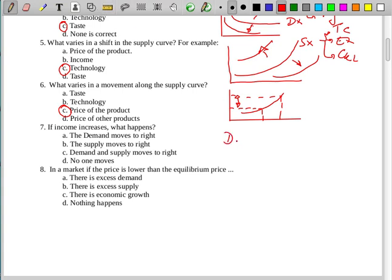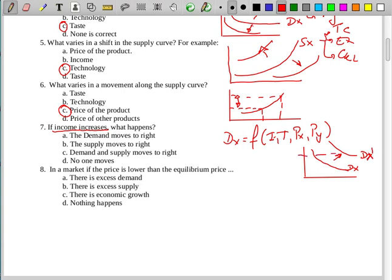Seven: if income increase, what happens? You remember demand depends on income, taste of the product, and price of the product or other products. When income increases, we have a lot of money to buy a lot of products. For this question, the demand moves or shifts to right because we have a lot of money to buy a lot of product or services. And this is the correct answer.